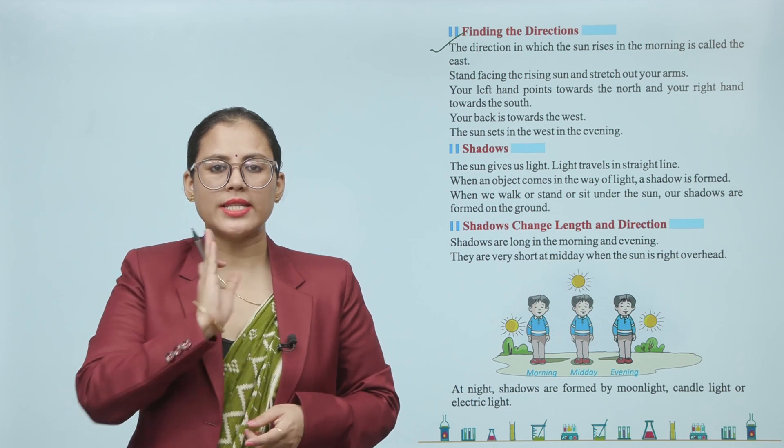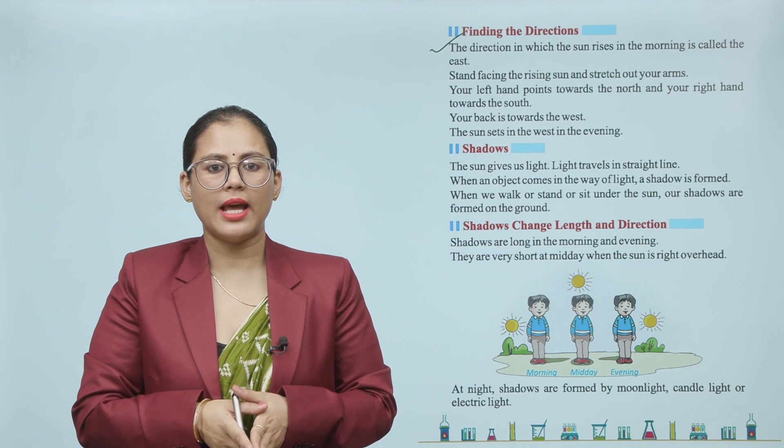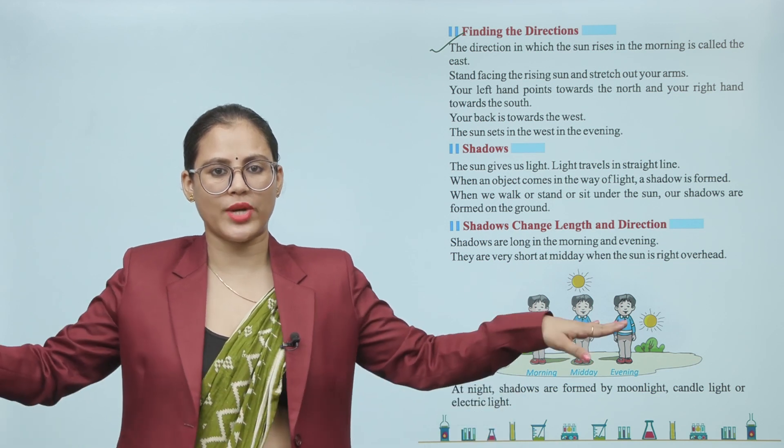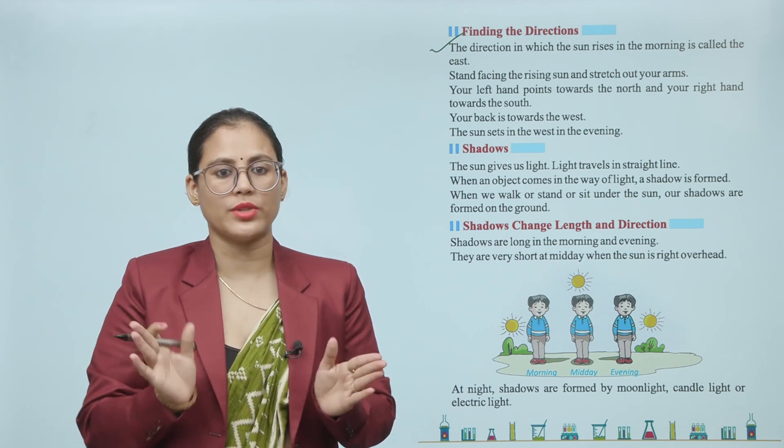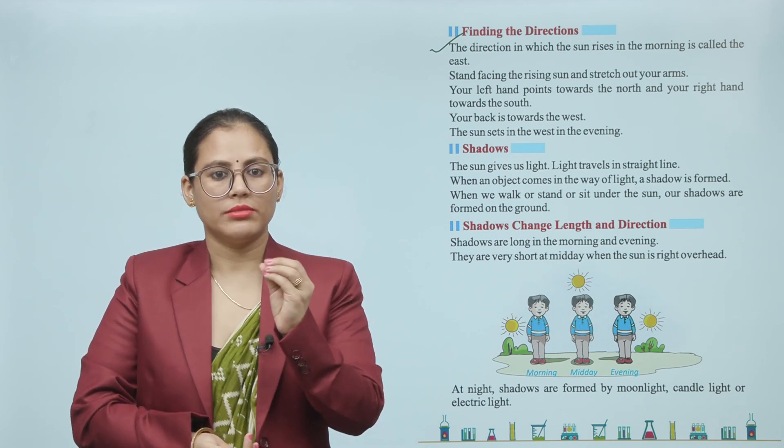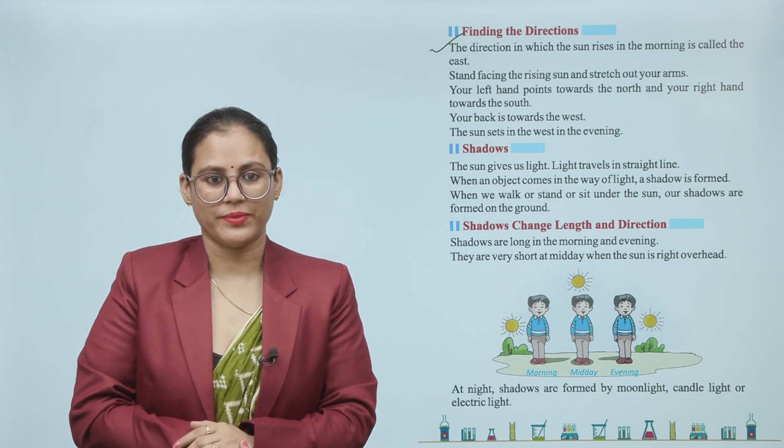The Sun sets in the West in the evening. When you face the sunrise in the East direction, stretch your arms: your left hand will point to the North direction and your right hand will point to the South direction, and your back will be towards the West direction.